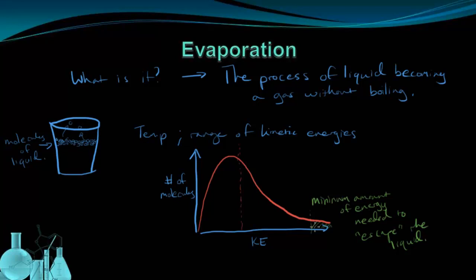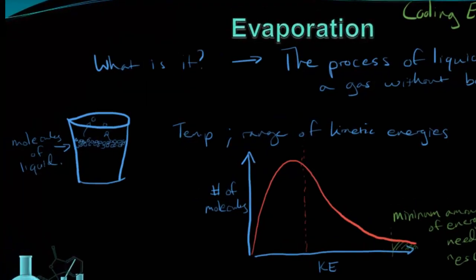Now something interesting happens when these molecules actually leave. When these high energy molecules leave the sample, it actually shifts the average kinetic energy lower, because you're getting rid of the very high numbers, so it drops the average. By dropping the average, the temperature drops as well, so evaporation has a cooling effect on a substance.